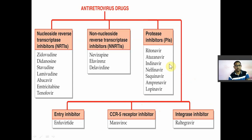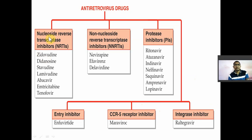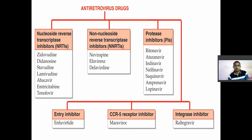Drugs used in anti-retroviral therapy, or drugs used in HIV treatment, are classified into six major classes: first, nucleoside reverse transcriptase inhibitors (NRTI); second, non-nucleoside reverse transcriptase inhibitors (NNRTI); third, protease inhibitors; fourth, entry inhibitors; fifth, chemokine receptor 5 (CCR5) inhibitors; and sixth, integrase inhibitors.